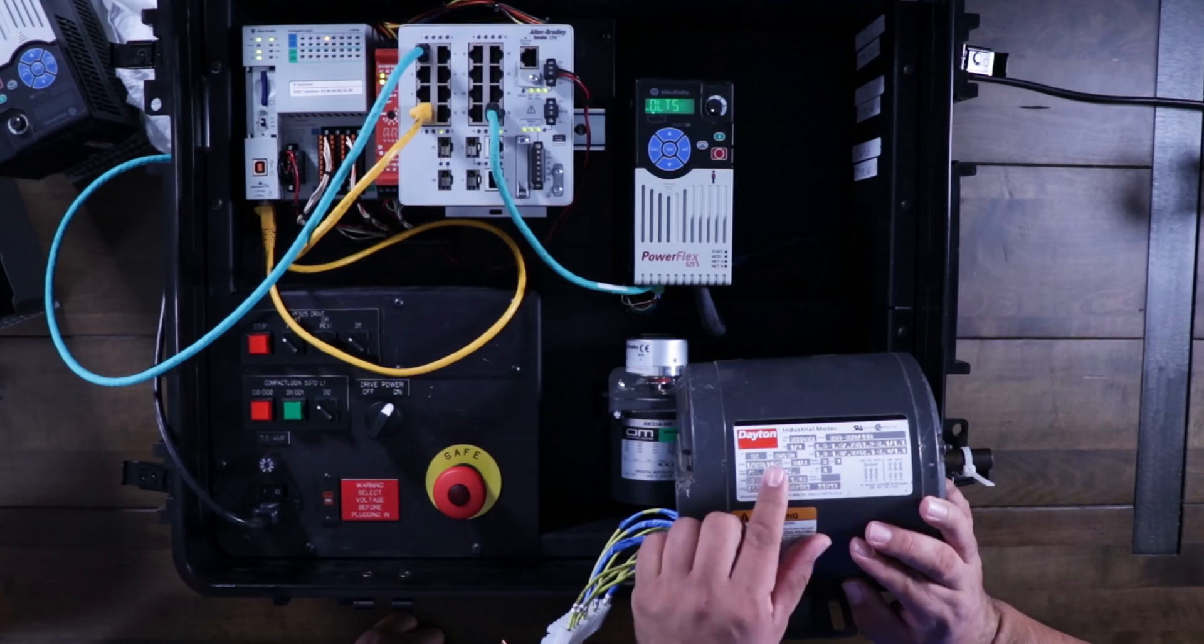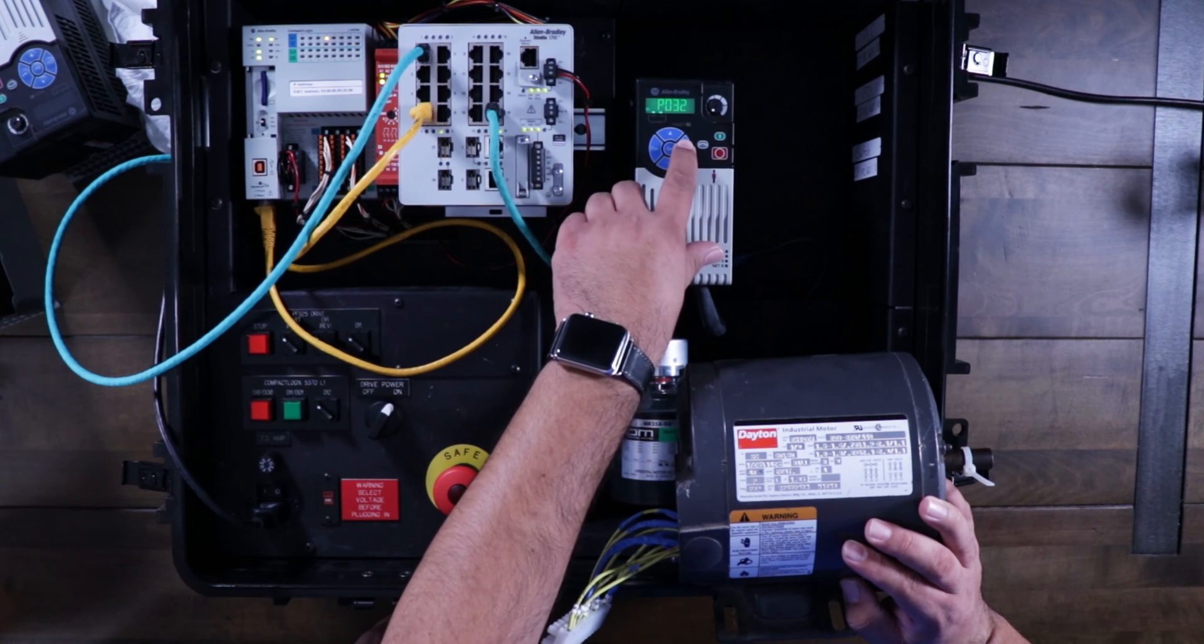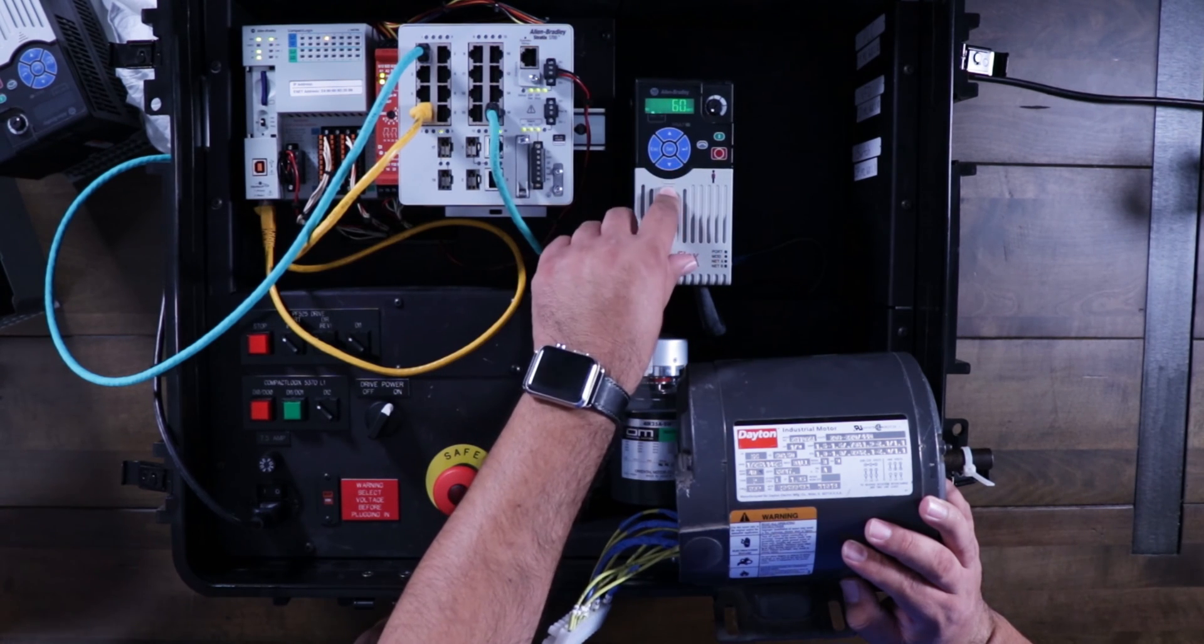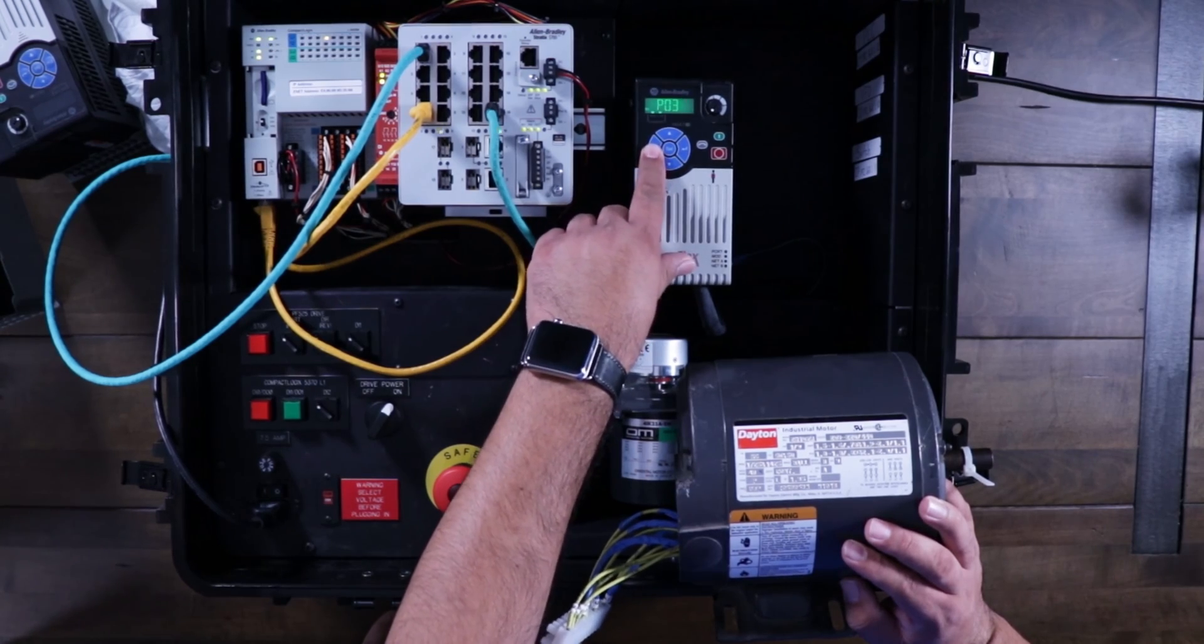Then we'll set the hertz of the motor, the frequency. This is a 60 hertz motor. It says so right there. So let's go up to P32 and it's already set to 60. That's the default, so we're good there.